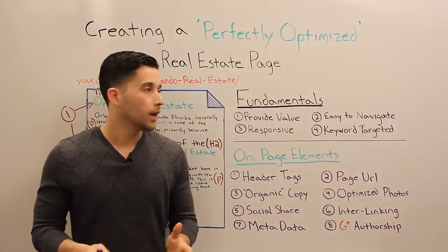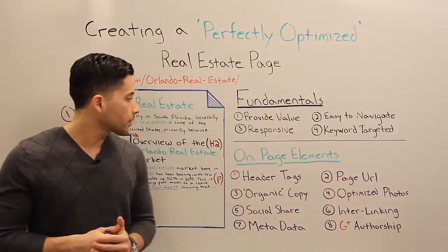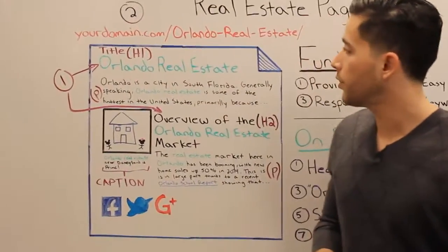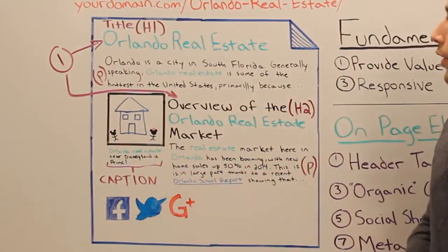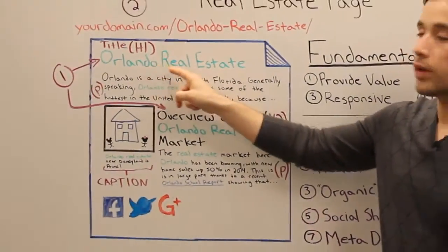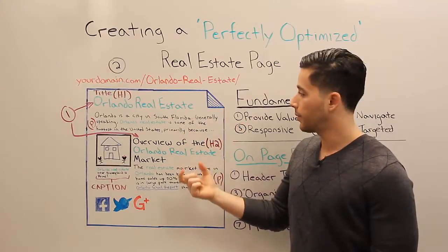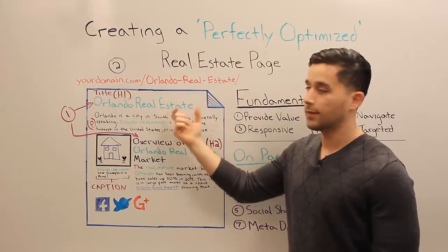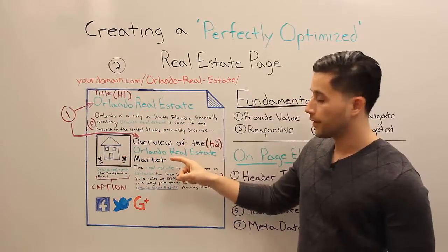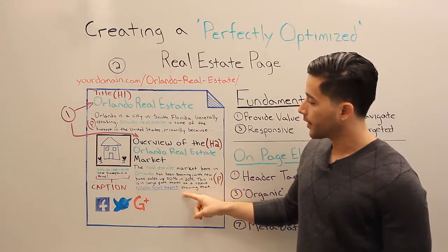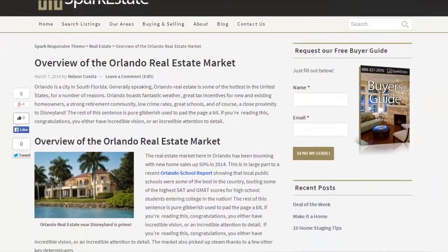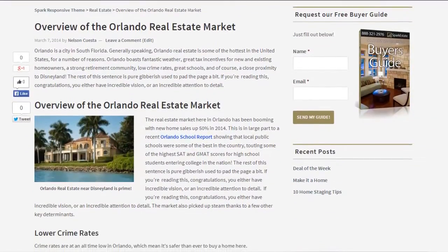Let's head right into the on-page elements. For today's video, this is the sample page I've created. The title is 'Orlando Real Estate' — that's the long-tail keyword and our primary keyword for this piece of content. The page includes a title, a paragraph, a subheading, a second paragraph, a hyperlink, a picture with a caption, social share icons, and a page URL. I'll go through each one individually.